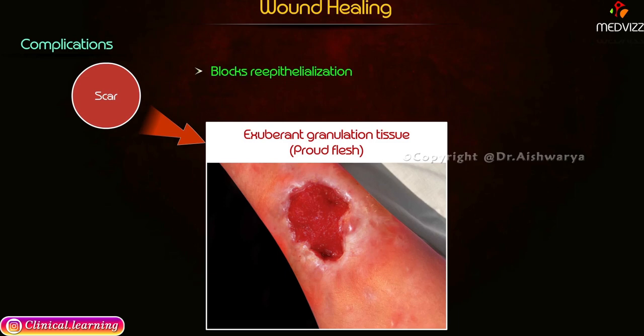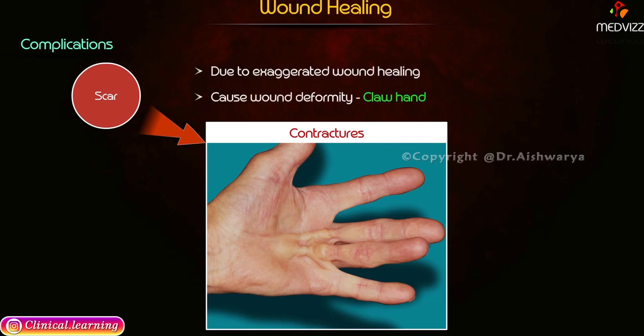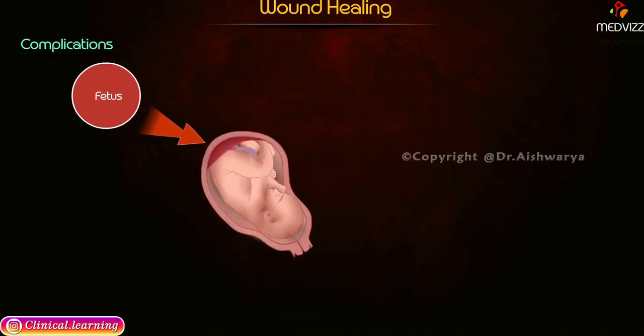Exuberant granulation tissue, called proud flesh, blocks re-epithelialization. Contractures are mainly due to exaggerated wound healing and can cause wound deformity, such as claw hand.